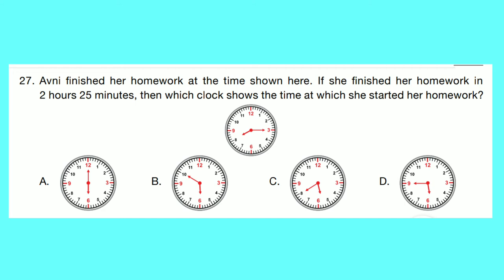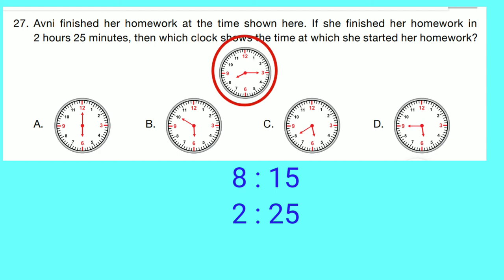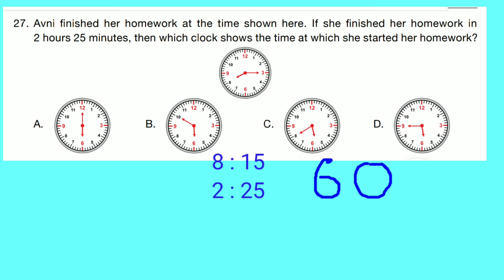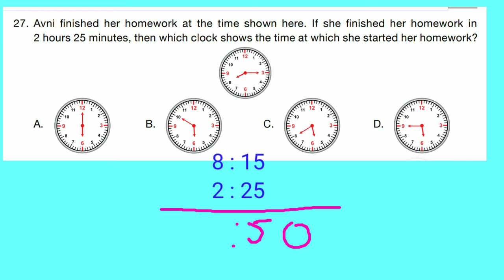Question number 27: Avni finished her homework at the time shown. If she finished in 2 hours 25 minutes, which clock shows the time she started? Time shown: 8:15. Subtracting 2 hours 25 minutes from 8 hours 15 minutes — since 15 is less than 25, borrow 60 minutes from 8 hours, giving 7 hours and 75 minutes. 75 minus 25 equals 50 minutes, 7 minus 2 equals 5 hours. Time is 5:50.